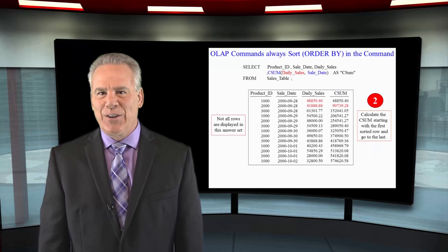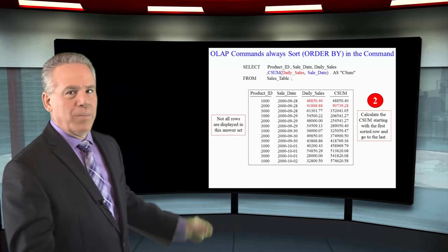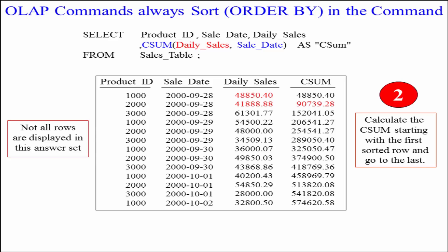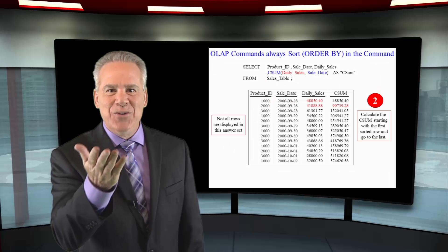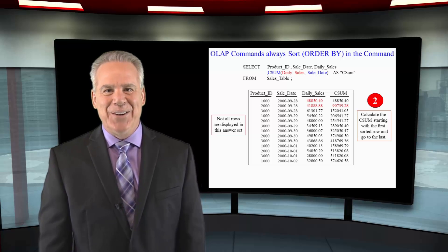I've got this color coded for you. Focus on the blue — we're doing a CSUM but we're going to sort by sale date first. Now focus on the red — we're going to CSUM daily sales. After the sort, what do we have in the first row? 48,850. That's the start of the cumulative sum. What do we have the next day? 41,888. Now it's going to be a cumulative sum of 9,739 and it just continues to add things up. That is what a CSUM is designed to do.